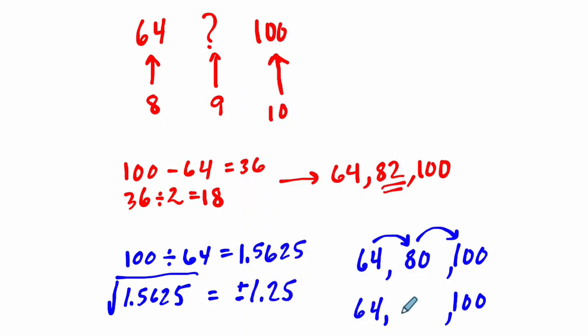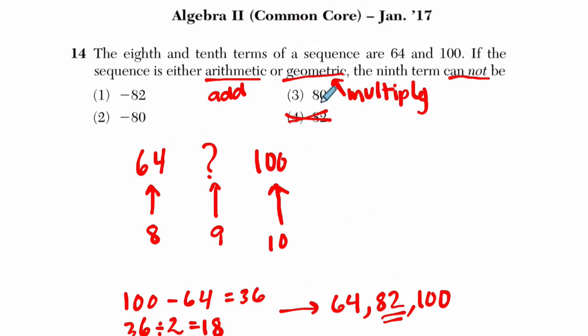And in the negative case, it would be negative 80. And they both work because if you then multiply 80 by 1.25, you get 100. If you multiply negative 80 by negative 1.25, you get positive 100 as well. They both fit the sequence. We don't know. It could be either one.